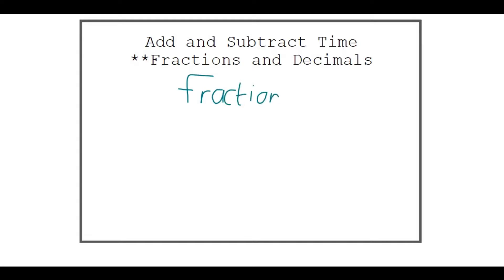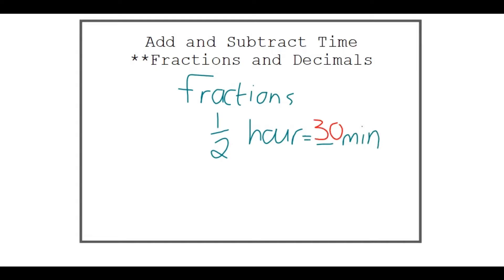I'm going to start with a basic, simple example. What is half an hour if you convert that to minutes? How many minutes will that be? We all know the answer — it's 30 minutes. But how did we get there? Half an hour is actually half of an hour, which is 60 minutes, and that 'of' can be replaced by a multiplication sign, which gives you 30.